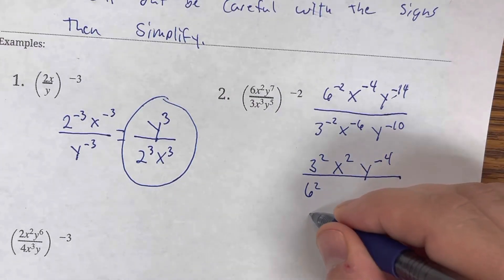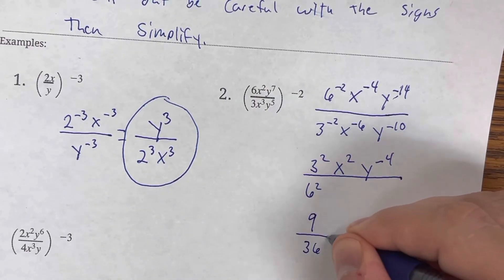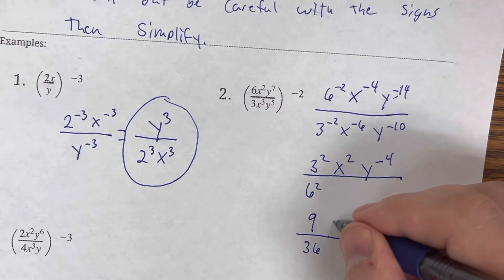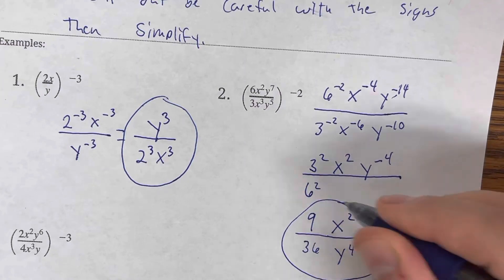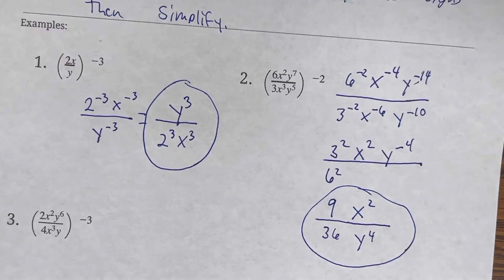3 squared, I'm going to simplify to 9. 6 squared is 36. x can stay. y has to go downstairs. So, a lot of work on that one. That's a tough one.